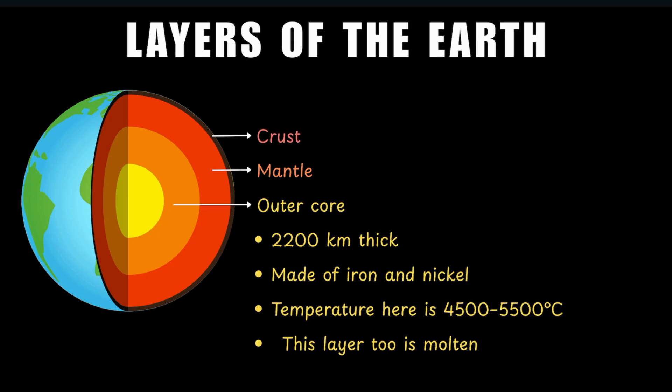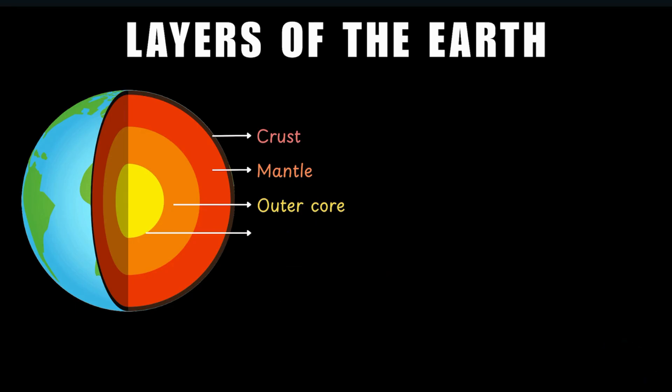Digging deeper into the outer core, we finally reach the solid inner core, which is also made up of iron and nickel. And here the temperature can reach up to 6,000 degrees Celsius. But how is it solid then? Think about it and let us know in the comments below.